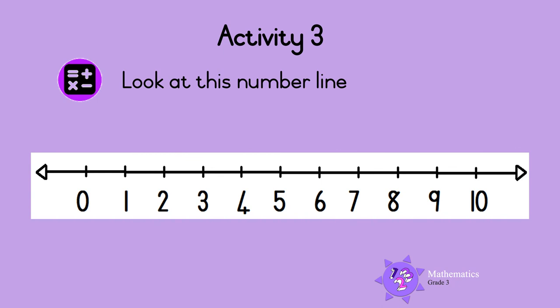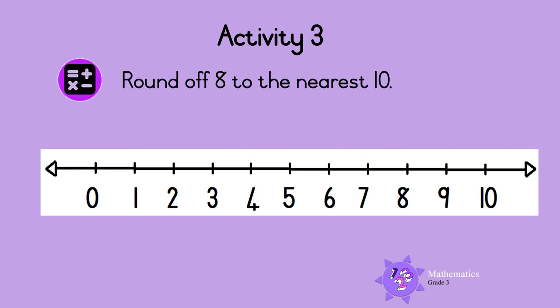Activity 3. Look at this number line. It starts at 0 and ends at 10. Round 8 to the nearest 10. Here is 8 on the number line. 8 is closer to 10, so round up to 10.